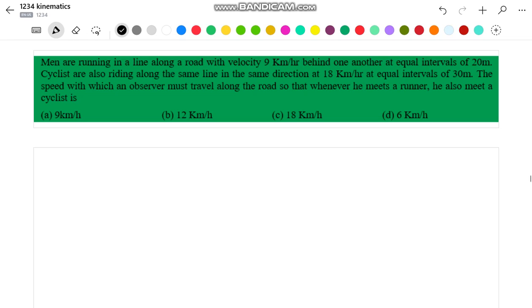Hello friends, let us try a problem based on kinematics. In the question, it is given that men are running in a line along a road with velocity 9 kmph behind one another at equal intervals of 20 meters. There are also cyclists riding along the same line in the same direction at 18 kmph with equal intervals of 30 meters. We have to find the speed with which an observer must travel along the road so that whenever he meets a runner, he also meets a cyclist.